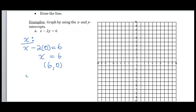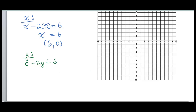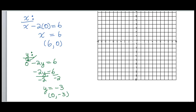Dividing both sides by negative two, I get y equals negative three. As an ordered pair, that gives me the point (0, -3). My x-coordinate is zero and my y is negative three.